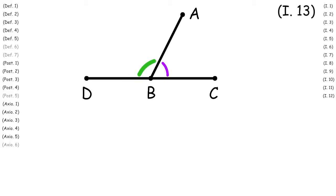We will prove that these two adjacent angles are congruent to the sum of two right angles. First with point B and line DC we apply Proposition 11 to create a perpendicular line on point B.